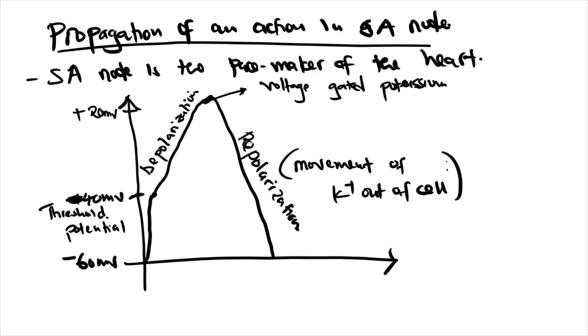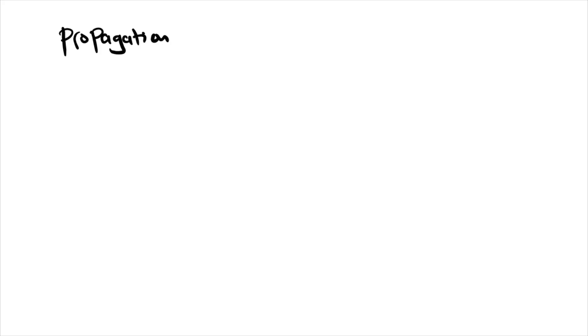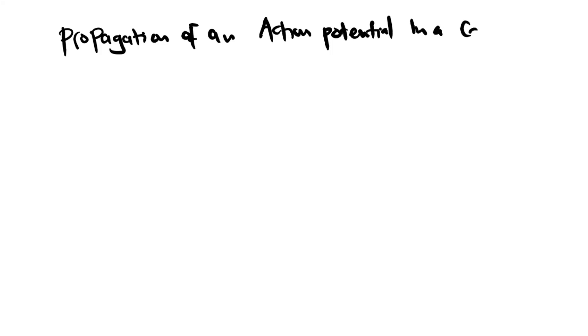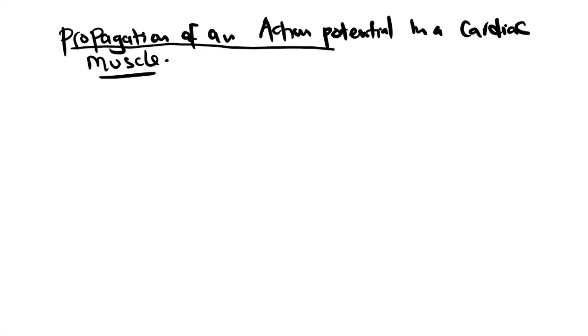That is how an action potential is propagated in the SA node. Now let's look at propagation of an action potential in cardiac muscle. The cardiac muscle action potential is a little different.